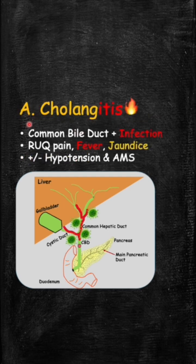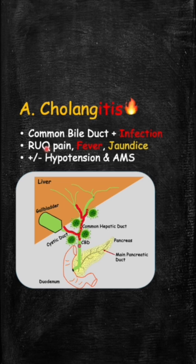Last but not least, we have acute or ascending cholangitis, which is a complication of choledocholithiasis. The stone is still in the common bile duct, but because the bile is static and stagnant, bacteria from the intestines can sneak in and cause an infection — inflammation of the biliary tract. The key finding is Charcot's triad: right upper quadrant abdominal pain, fever, and jaundice. If the patient gets sicker, this causes severe sepsis, adding hypotension and altered mental status. These two findings plus Charcot's triad are called Reynolds pentad.